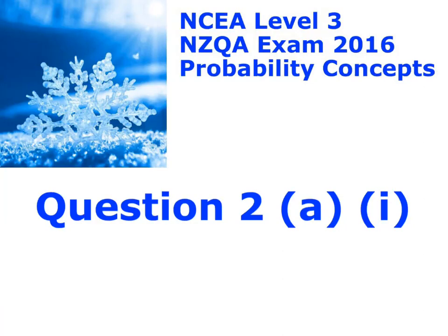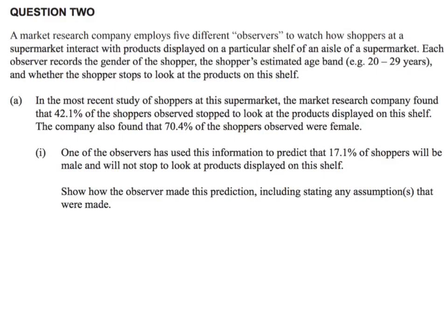So here is question 2a part 1. This is talking about some people called observers who are looking at how shoppers interact in a supermarket. That helps them decide what kind of displays help people buy products and all of those kinds of things.